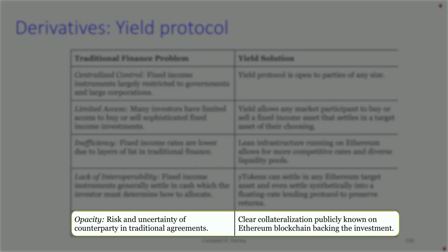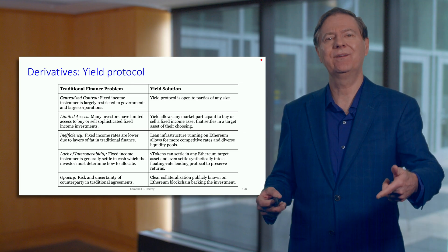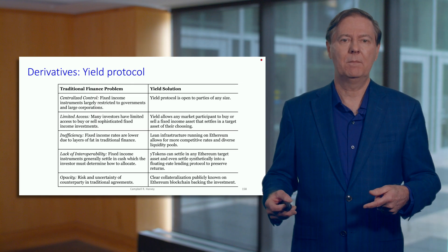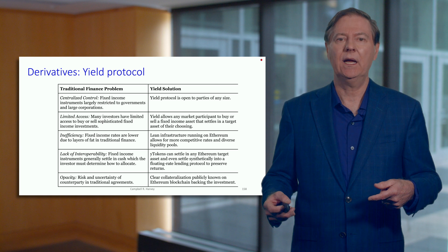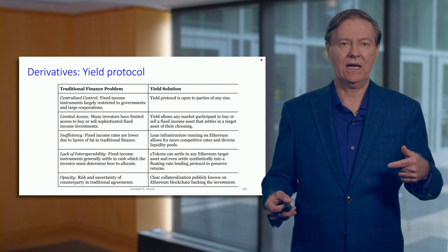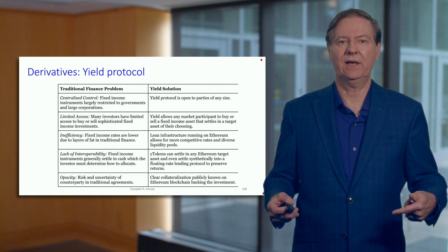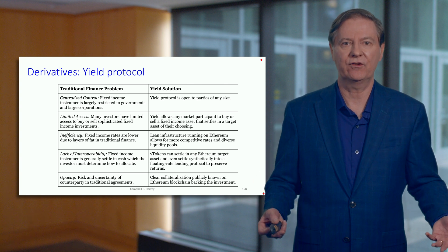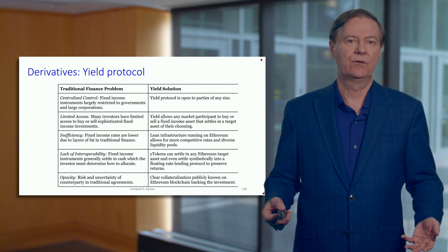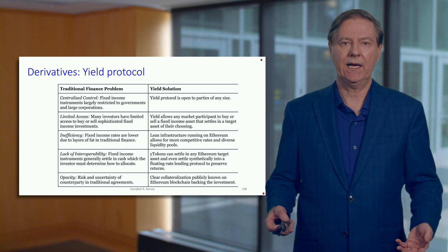And the last thing — opacity. In decentralized finance, this is completely open. You can see everything, and it's easy. We'll go through examples later where I pull up Etherscan and you can see the actions step by step, which of course is not possible in traditional centralized finance.